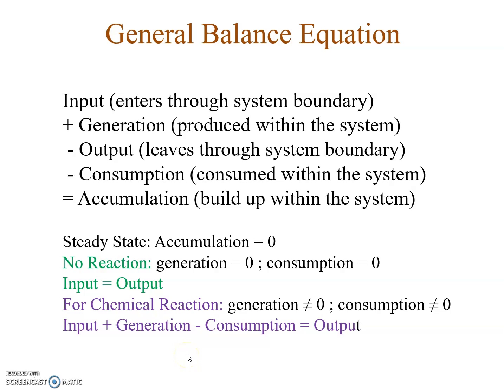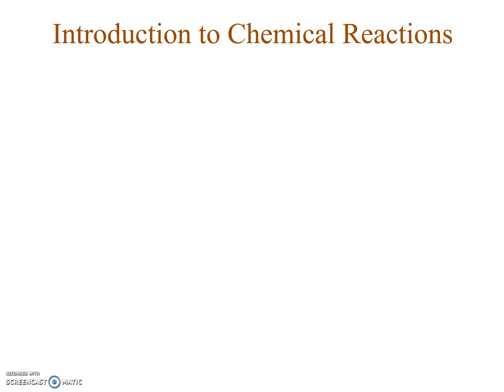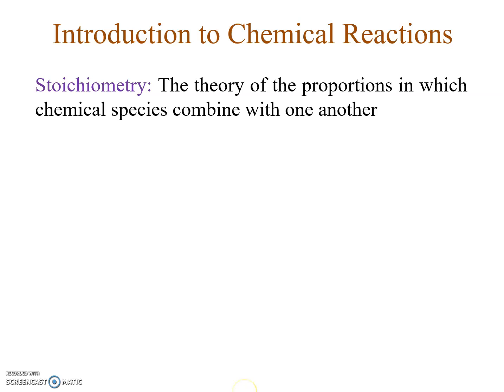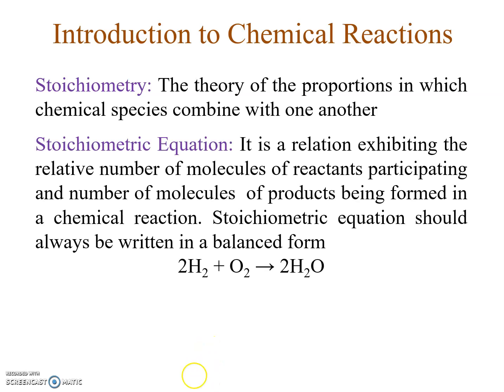Before starting any real problem, I will quickly get you familiar with the terminology we are going to use. First, let's talk about stoichiometry — basically a theory of the proportions in which chemical species combine with one another. Different atoms can combine in different proportions to give you different chemical species. A stoichiometric equation tells you in what ratio molecular species combine to give you a different molecular species.